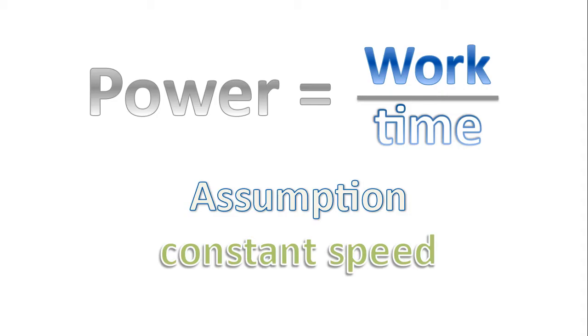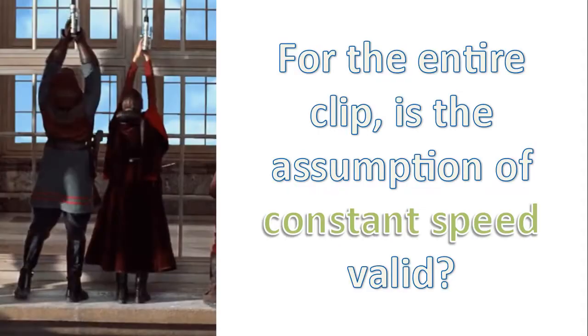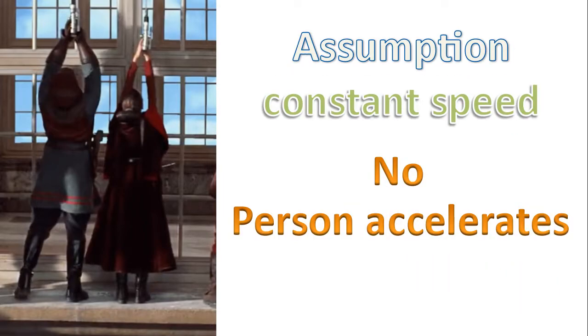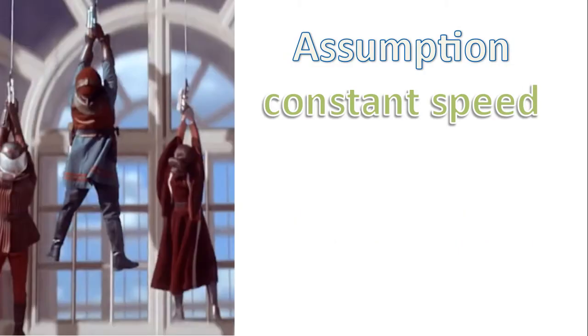Well the first assumption is that the characters are moving at constant speed. So for the entire video clip, is the assumption of constant speed valid? Well the answer is no. At the very beginning of the video clip, clearly the person is stationary and the person is accelerating upwards. So it's not valid at that point of the video clip. So on purpose, we will focus in on a part of the video where we believe the character is moving upwards at a constant speed.